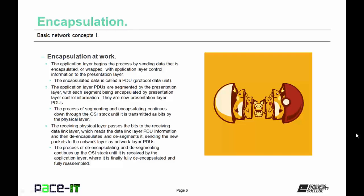Let's talk about how encapsulation works. The application layer begins the process by sending data that is encapsulated, or wrapped, with application layer control information to the presentation layer. The encapsulated data is called a PDU, or protocol data unit. The application layer PDUs are segmented by the presentation layer, with each segment being encapsulated by presentation layer control information — they are now presentation layer PDUs. The process of segmenting and encapsulating continues down through the OSI stack until it is transmitted as bits by the physical layer.